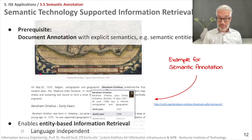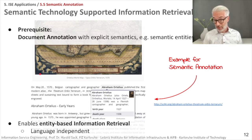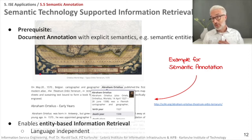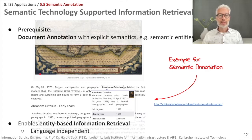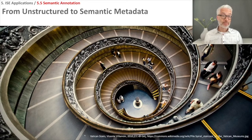As soon as you have a semantic annotation, you enable so-called entity-based information retrieval. You are no longer looking for the text alone but for the meaning, because via the search interface you can directly refer to a specific entity for which you have the URI. This is entity-based information retrieval, which we will talk about in one of the next lectures.